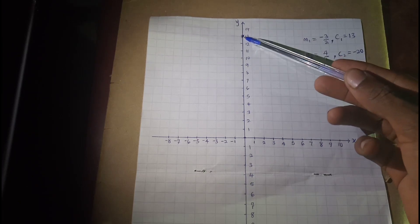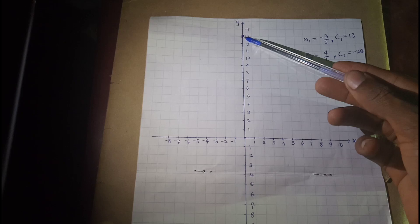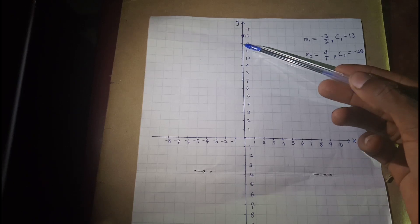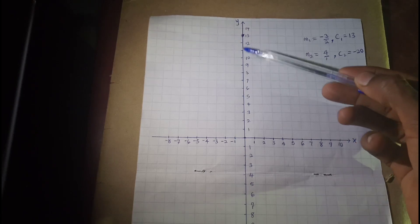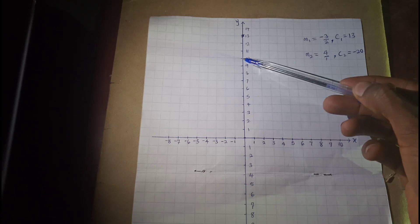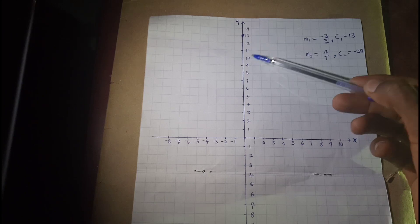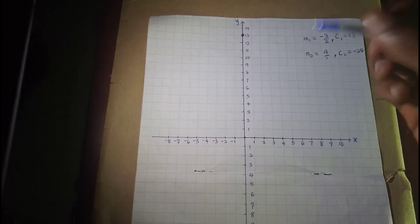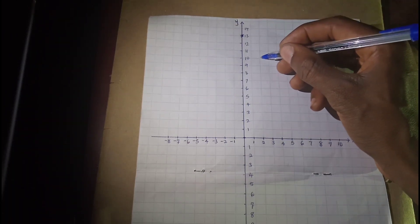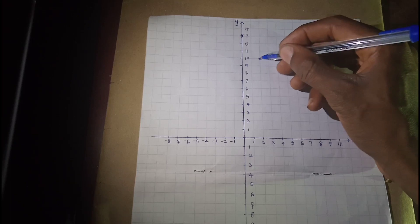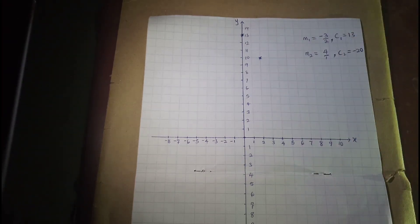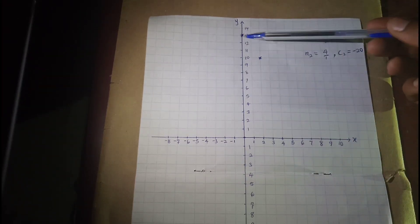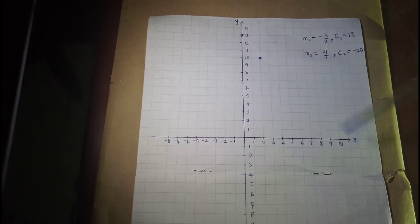Therefore, from the intercept, we rise three times downward. 1, 2, 3. Then from here, we run two times to the right. 1, 2. And we indicate with a star there. Then we use a ruler to connect the two points together, which is the line graph of equation 1.